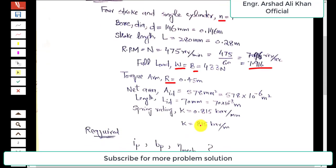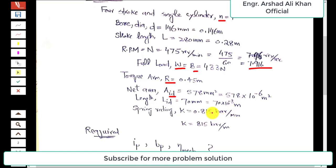The net area of the indicator diagram, denoted A_id, is 578 square millimeters, or 578 × 10⁻⁶ square meters. The indicator diagram length is 70 millimeters, or 70 × 10⁻³ meters. The spring rating constant, represented by small k, is 0.815 bar per millimeter. Converting to SI units: since 1 millimeter equals 10⁻³ meters, dividing 0.815 by 10⁻³ gives 815 bar per meter.